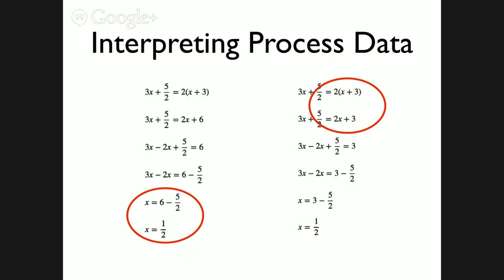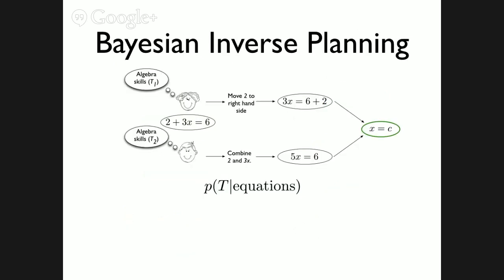If we could detect why students got a problem wrong, or their tendencies toward particular error types across several problems, we could help them more efficiently. This student might benefit from arithmetic practice; this student could watch a Khan Academy video on the distributive property. However, most existing computer-based algebra systems aren't able to do that — they either structure problem-solving to make it more interpretable, or they only use final answers. Instead, our approach tries to interpret students' free-form actions to make fine-grained inferences, just as a teacher would.